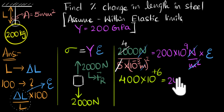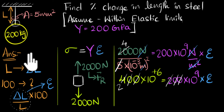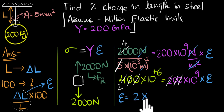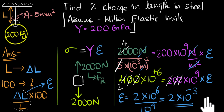We have 10 to the power minus three squared, which is 10 to the power minus six. Moving that to the numerator gives 10 to the power plus six. So 400 times 10⁶ equals 200 times 10⁹ times E. Canceling zeros, we get E equals 2 times 10⁶ divided by 10⁹, which equals 10 to the power minus three. And notice there are no units — that makes sense because strain is unitless, meters per meter cancels. So our strain is 10⁻³.